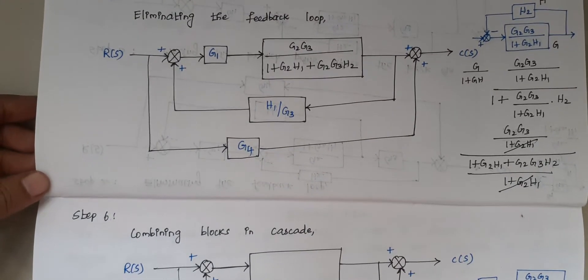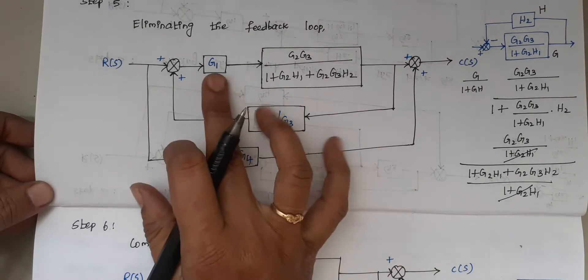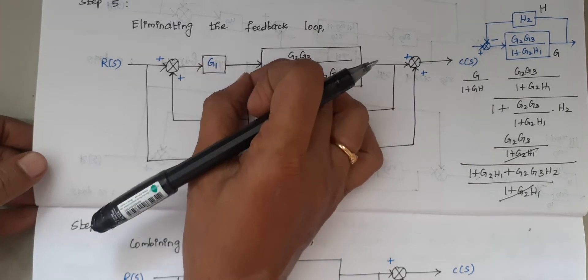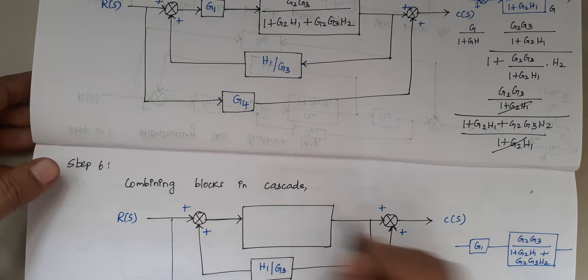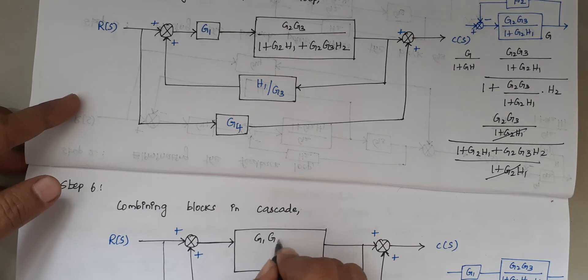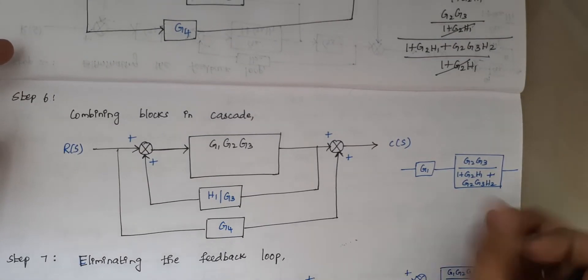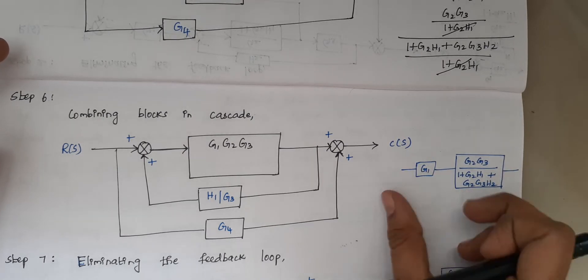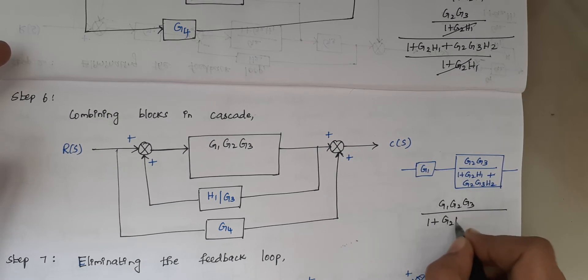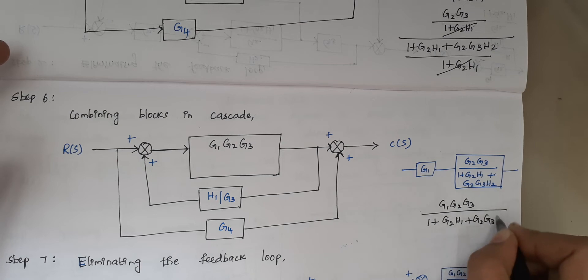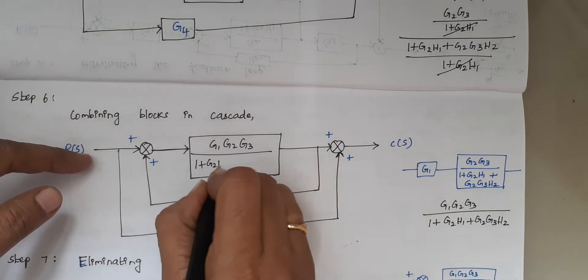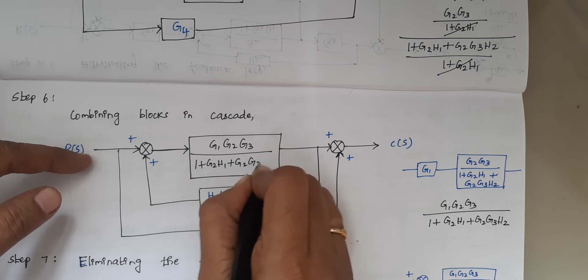Step 6 is combining blocks in cascade again. We multiply G1 with the previous result G2*G3/(1+G2*H1+G2*G3*H2), giving us G1*G2*G3 divided by (1 + G2*H1 + G2*G3*H2).